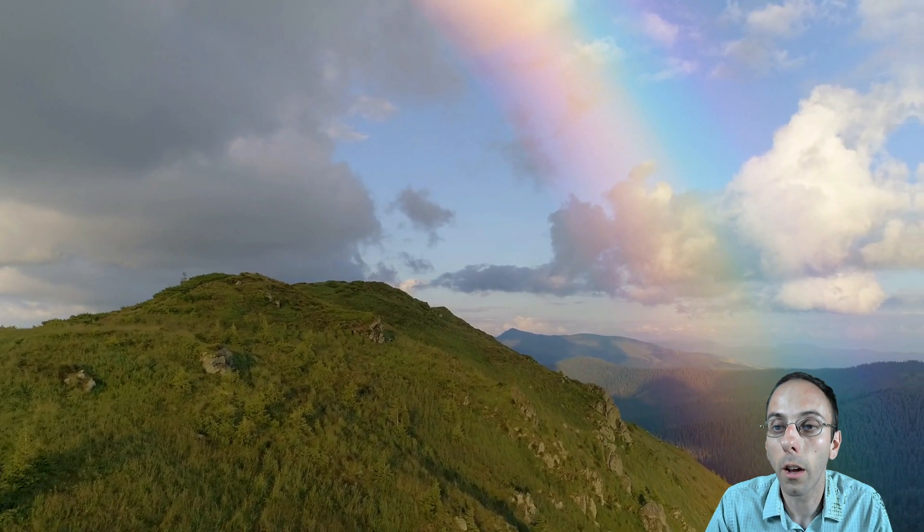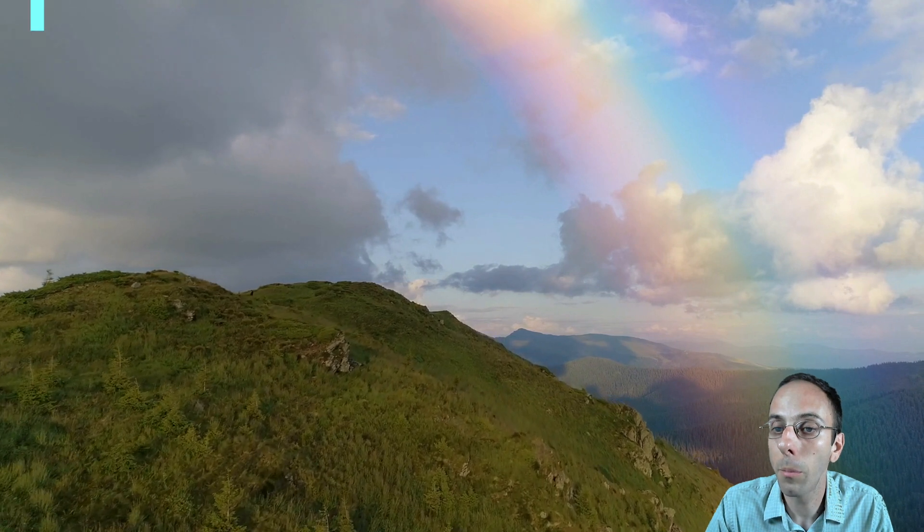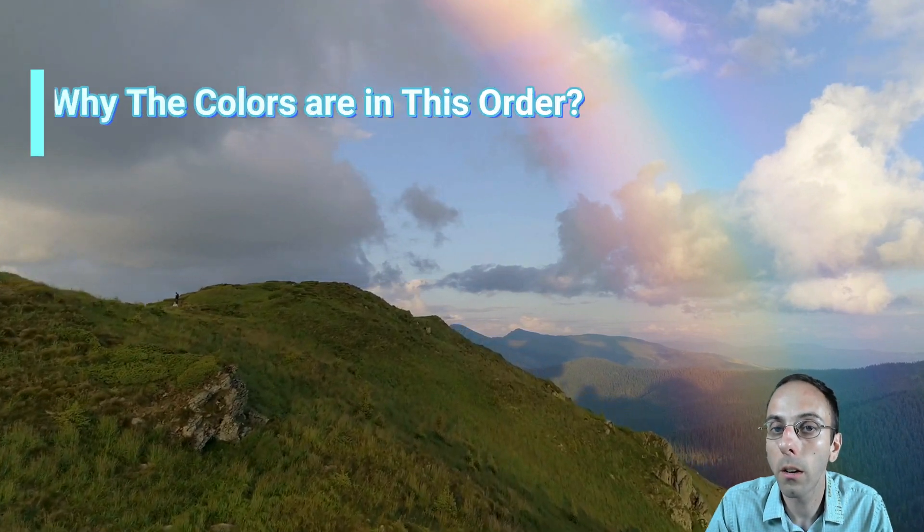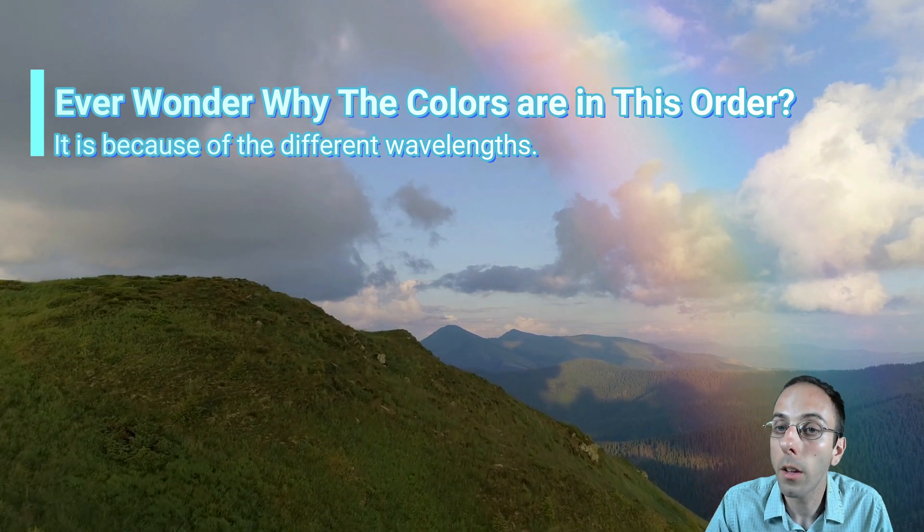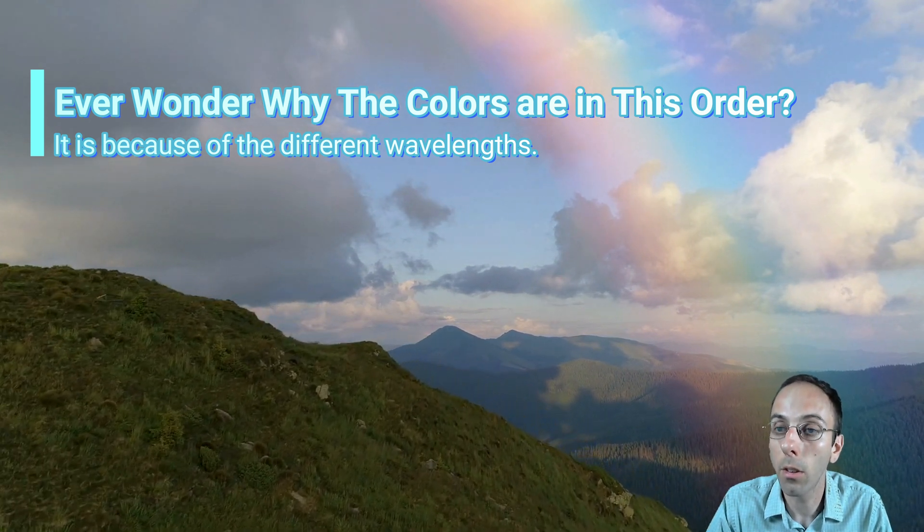So starting off, here we see a nice rainbow over a nice rolling mountain. Did you ever wonder why the colors are always in this order? And it's because there's different wavelengths associated with those different colors.